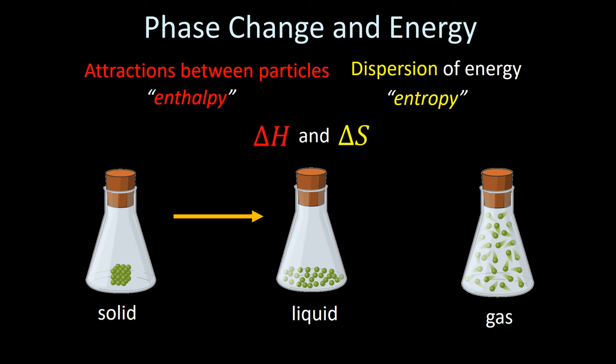As you go between a solid and a liquid, you have to put enthalpy in to overcome the intermolecular forces, and as a result, the energy in the liquid form is more dispersed. So when you go from a solid to a liquid — also called melting — both of these values increase. By the same token, when you go from a liquid to a gas, heat has to go in and the energy is also more dispersed, so these values also increase.